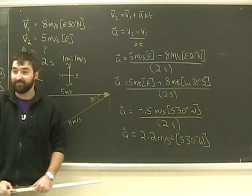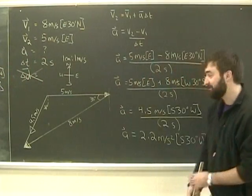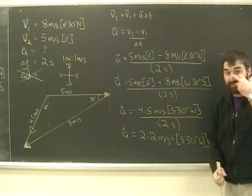Obviously, on my test I would then write my nice statement: the acceleration of the car is 2.2 meters per second squared south 30 degrees west.